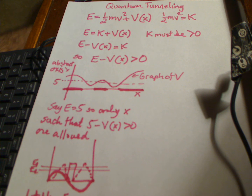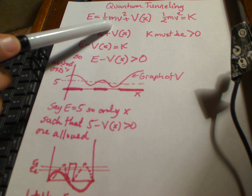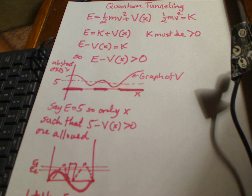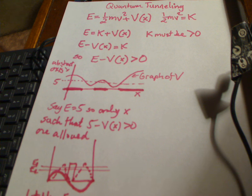The first quantity, one-half mv squared, is the kinetic energy, usually called K. The mass is positive, one-half is positive, and velocity squared is always positive — in one dimension it's just v squared, in higher dimensions it's the magnitude of the velocity vector squared. Either way, everything there is positive, so K must be positive. In short, you can write energy E equals K plus V of x.